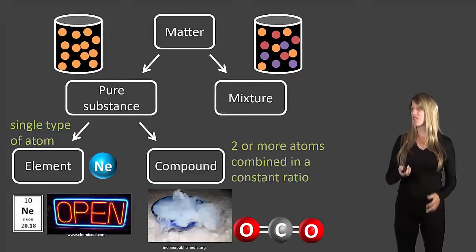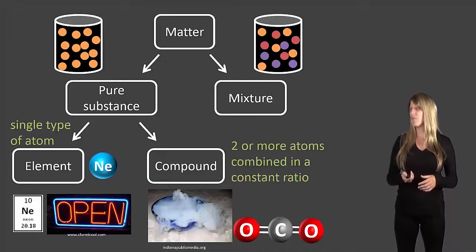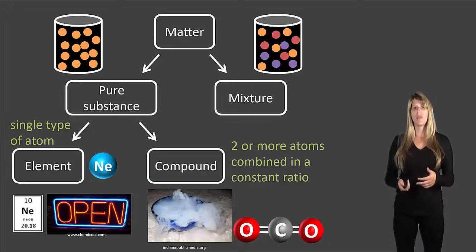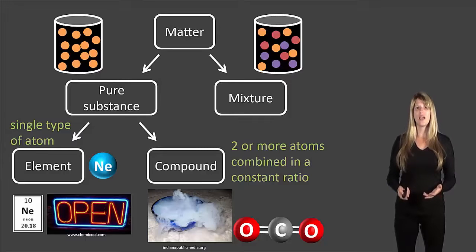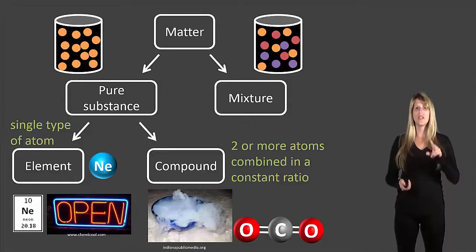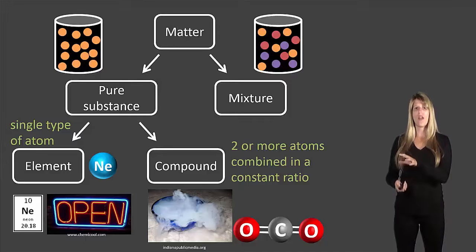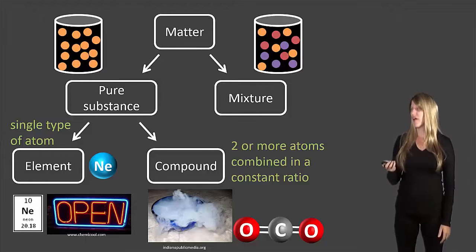And then finally pure substances can also be split into compounds. Compounds have two or more atoms combined in a constant ratio. Now what we mean by that is carbon dioxide always has one carbon and two oxygen. So if you mix one carbon and two oxygens together it makes carbon dioxide. There's only one carbon and one oxygen, that's carbon monoxide and that's a different compound. But as long as it has the same number of elements in the same ratio you're going to end up with the compound.